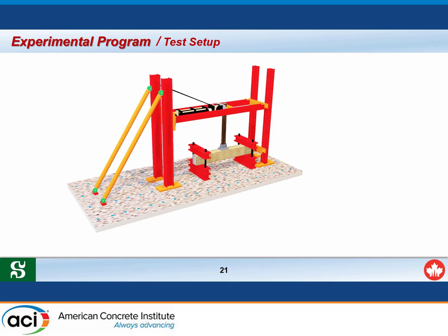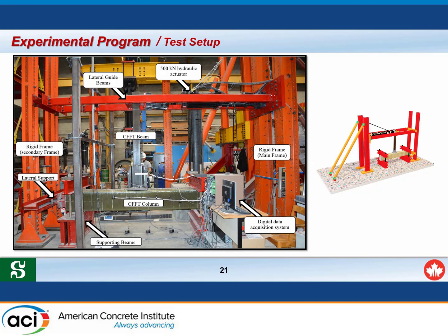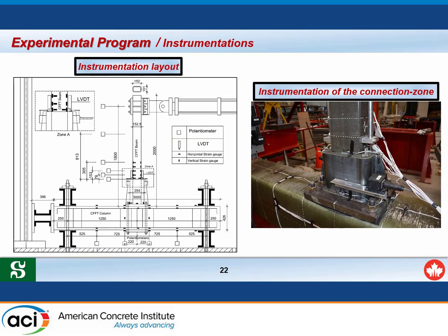All specimens were tested under the same test setup, where the CFFT column was aligned horizontally and supported by two vertical rigid steel supports and laterally by a steel frame. The setup consisted of two rigid steel frames connected by two rigid steel beams, with a 500 kN actuator attached to apply the loads. Instrumentation included tensiometers for vertical and lateral displacement of the CFFT column, two LVDTs to measure slippage between the CFFT beam and the epoxy grout, and two tensiometers to measure slippage between the steel connection and the epoxy grout.